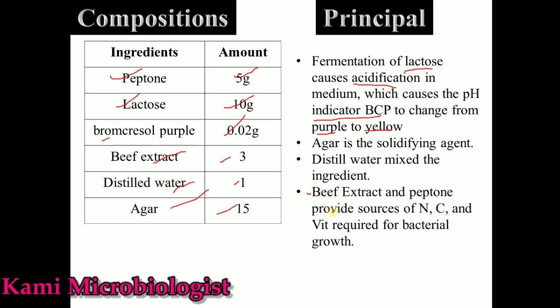Beef extract and peptone are specially used to provide nitrogen, carbon, and vitamins that are needed for bacterial growth and cell division. Distilled water is used to mix all the ingredients, and agar acts as a solidifying agent to provide a stable environment through which bacteria grow in the form of colonies.